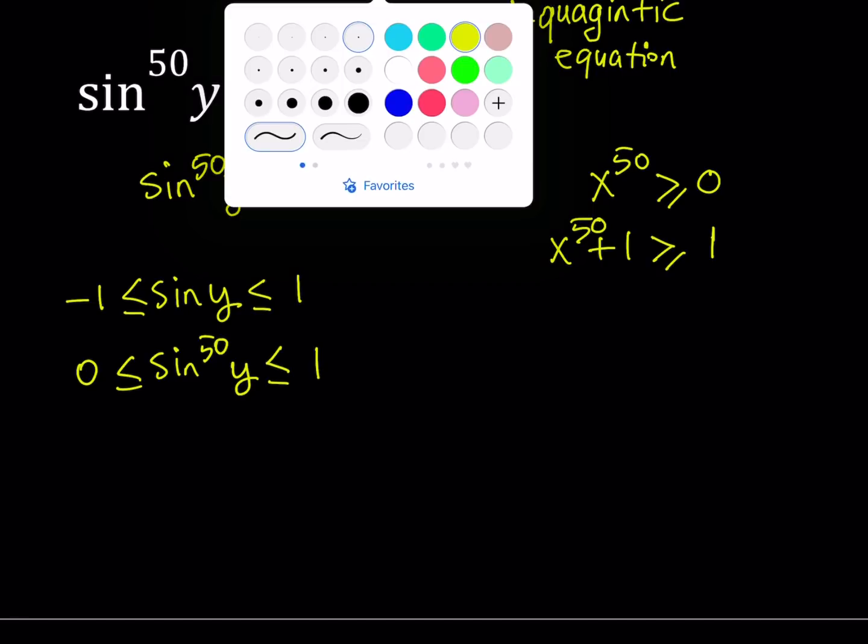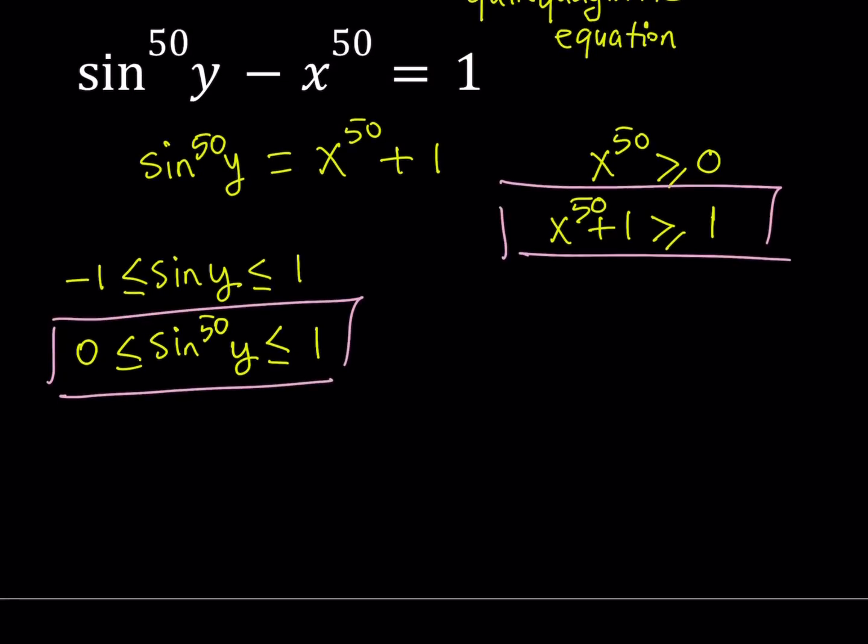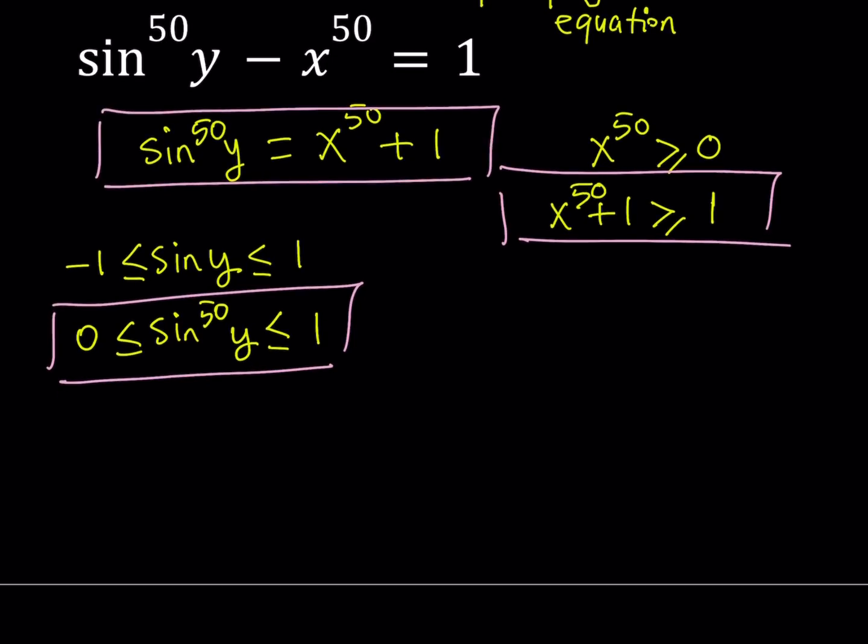Great. So now we got two inequalities. Let's go ahead and put those together. I got this one and this one. So one of the inequalities tells me that, if you consider this equation, of course, one of the inequalities tells me that the left hand side is less than or equal to 1, which means the maximum value for the left hand side is 1.